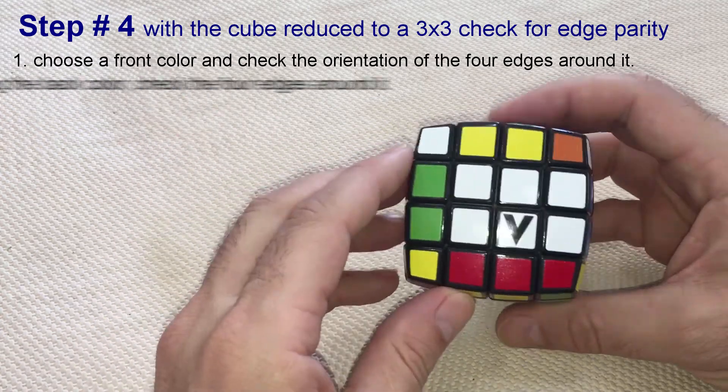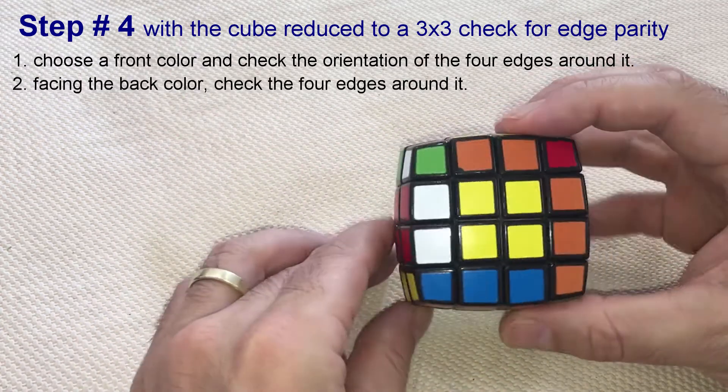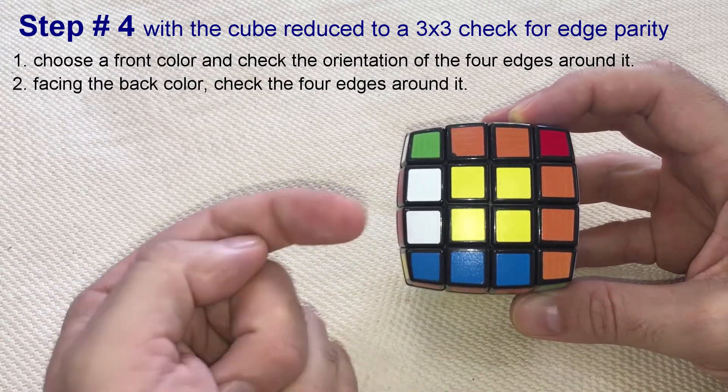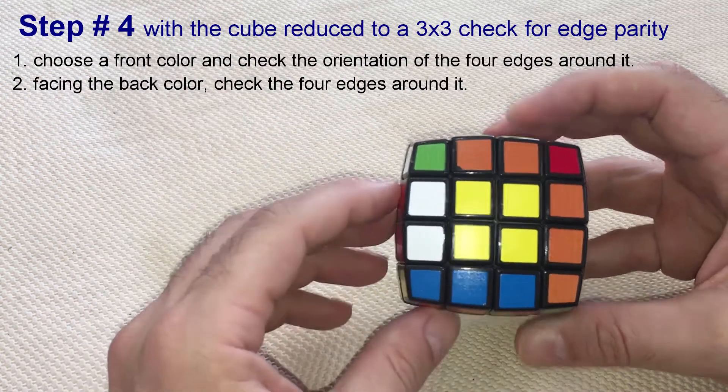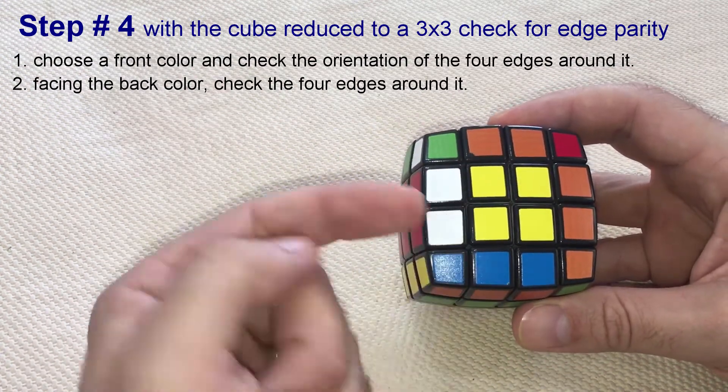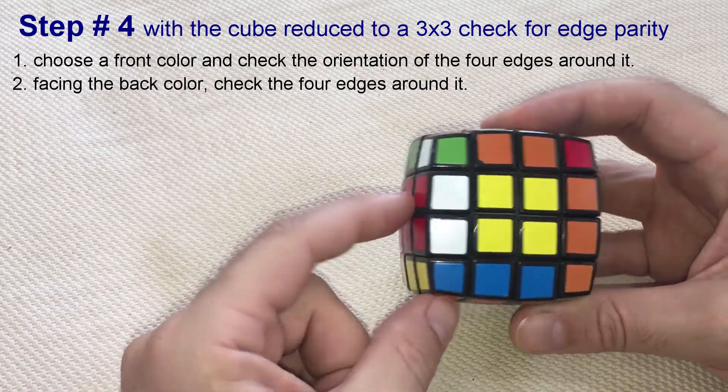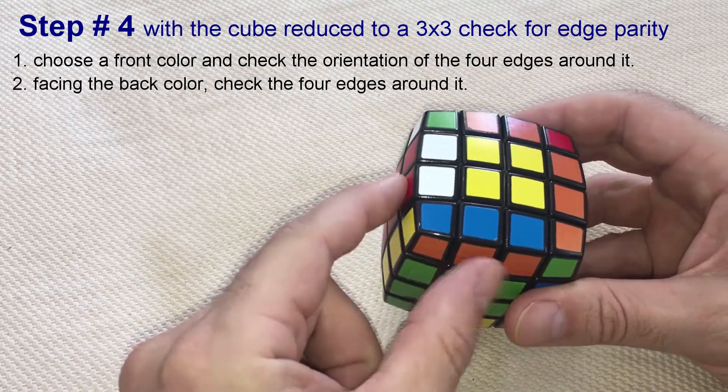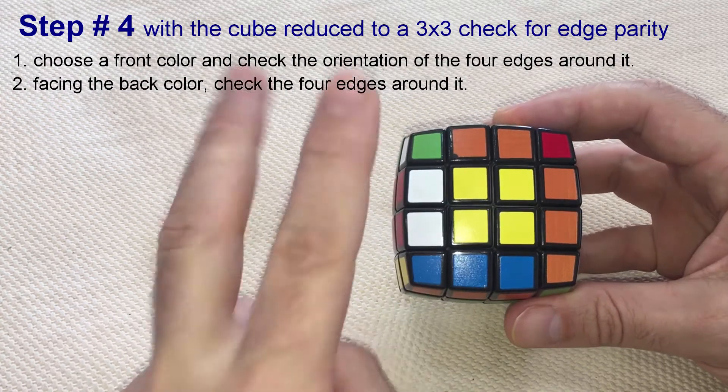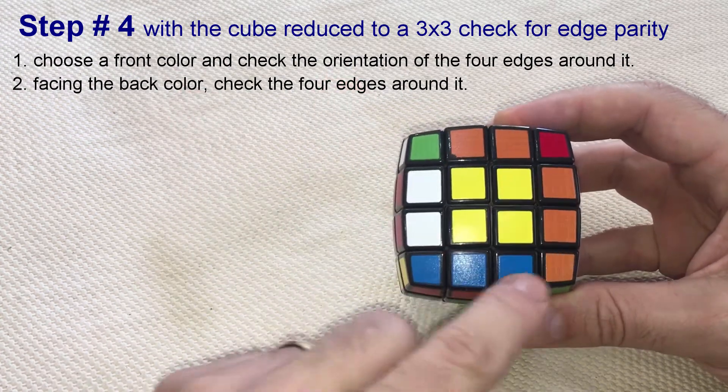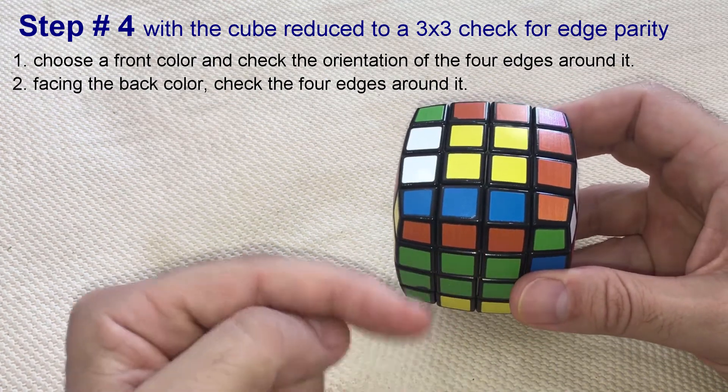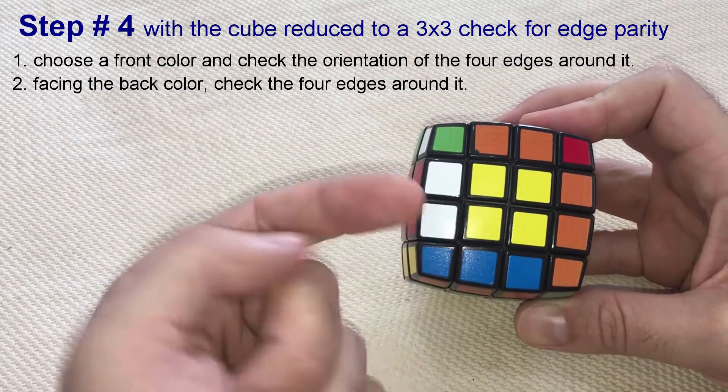Now, flip the cube and bring the back face into the front. With the yellow center facing you, again the same procedure. Count as good edges the ones with white or yellow facing you, and the ones with red or orange facing aside. We have two good edges in the back yellow face: this orange facing aside and this white facing you.